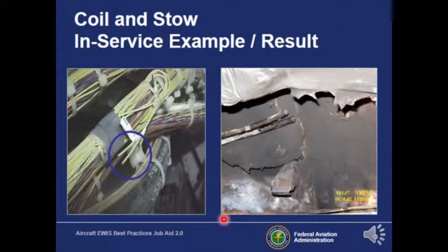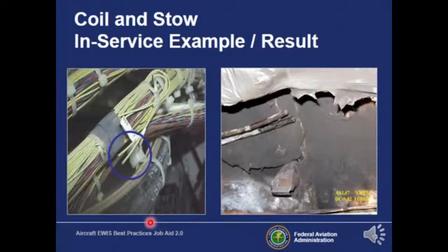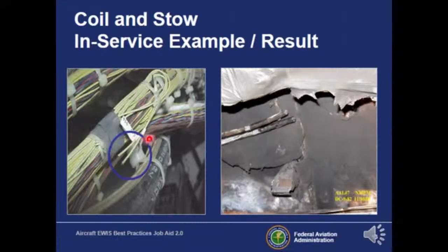Here we see an example of coil and stow problems. These wires are squirreling about — we don't want unused wires just hanging out. You also notice that copper is exposed, so it should be capped. And finally, you want to make sure that everything is bundled together.